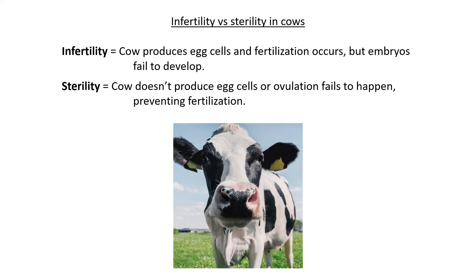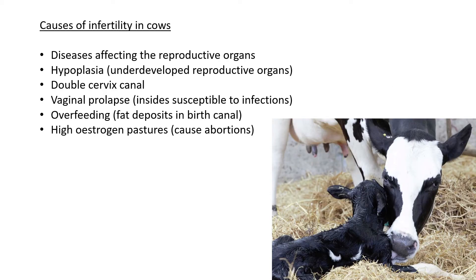Looking at the causes of infertility in cows: firstly, some diseases can affect the reproductive organs — mainly the uterus or the endometrium lining. Since with infertility the cow does produce egg cells and ovulation occurs but the young calf does not develop, diseases affecting the uterus can prevent the young fetus from developing.